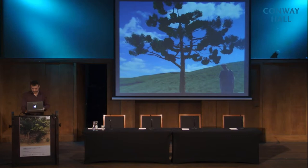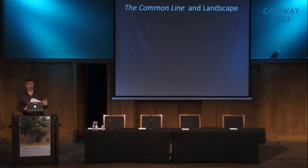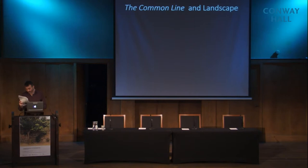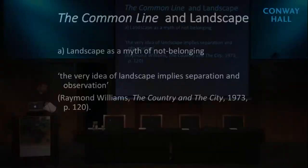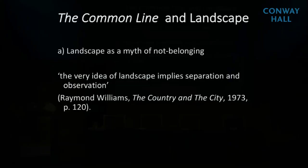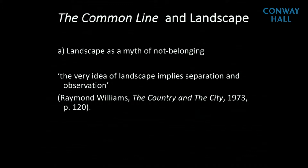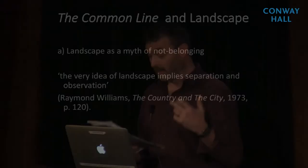That brings me on to thinking about the types of politics of landscape involved in the work we're doing. I'm going to talk through what we're calling two persistent myths of landscape — a myth of belonging and a myth of not belonging. Drawn here on an essay by art critic Robin Kelsey: landscape as a myth of not belonging. When Raymond Williams declared back in 1973 in The Country and the City that the very idea of landscape implies separation and observation, what he pinpointed was a particular sense of aloofness and apartness as integral to landscape as an aesthetic, mostly visual experience.